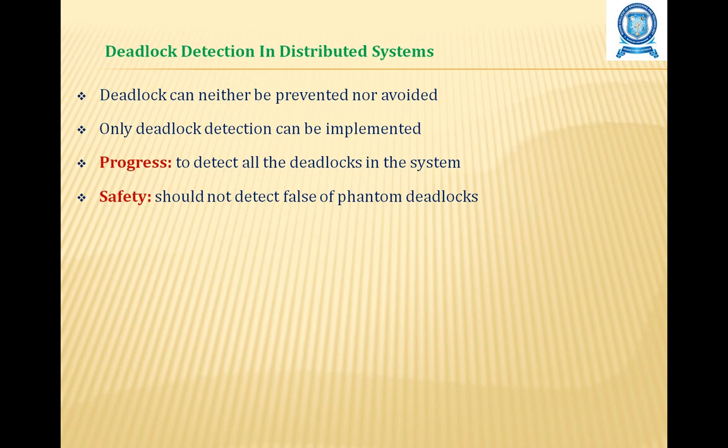Deadlock can be dealt with using three strategies: deadlock prevention, deadlock avoidance, and deadlock detection. Deadlock detection requires an examination of the status of processes, resources, and their interactions for the presence of a deadlock condition. In this lecture, we study several distributed deadlock detection techniques based on various strategies.